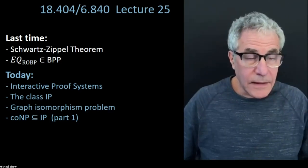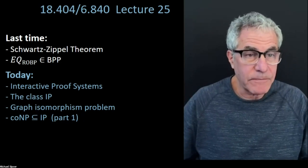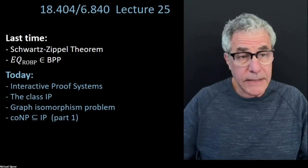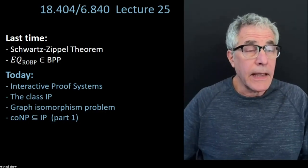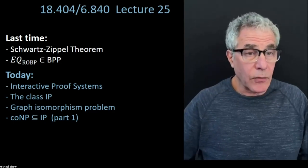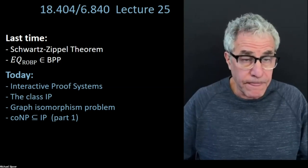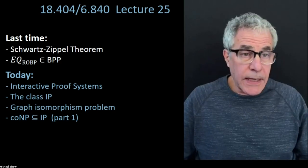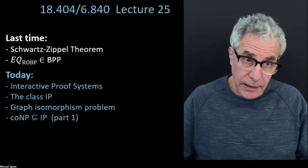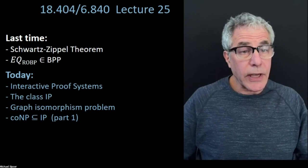Hi everybody, I'm glad to have you all back for our next-to-last installment of Theory of Computation. Today we are going to embark on the very last big topic for the semester. In some ways it will follow on what we started a couple of lectures back when we looked at probabilistic Turing machines and probabilistic computation and its associated class BPP. What we're going to discuss is a probabilistic version of NP, and that's going to be a complexity class called IP, which stands for Interactive Proof Systems. We're going to present that model and look at a couple of examples.